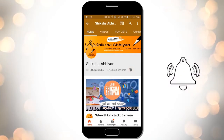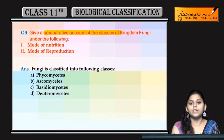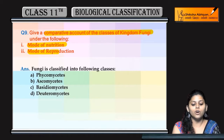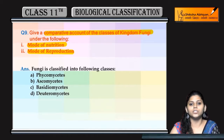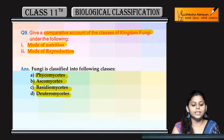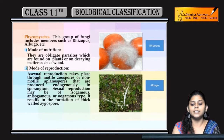The next question asks for a comparative account of classes of fungi under mode of nutrition or mode of reproduction. Fungi ki four main classes hain: Phycomycetes, Ascomycetes, Basidiomycetes, and Deuteromycetes.